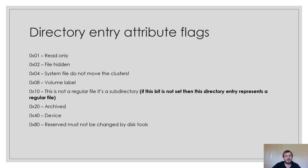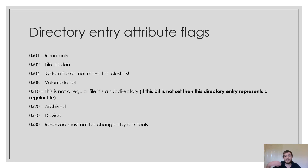The directory entry attribute flags are a bit mask. The flags include: read-only, file hidden, system file do not move, volume label. Bit 0x10 means it's a subdirectory — if this bit is set it's a subdirectory; if not set, it represents a regular file. Bit 0x20 is archived. Bit 0x40 is device. Bit 0x80 is reserved and must not be changed by disk tools.